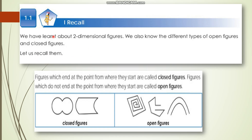First, tell me about two-dimensional figures. What are two-dimensional figures? The circle, triangle, rectangle, square - these all are two-dimensional figures. These shapes have two dimensions - length and breadth. So these shapes are called two-dimensional figures.